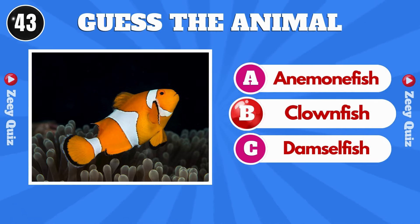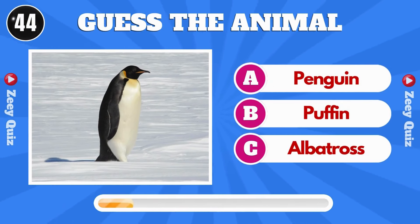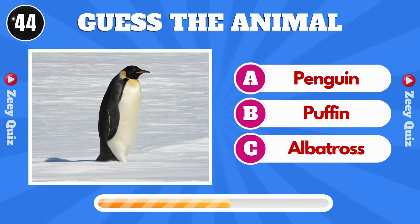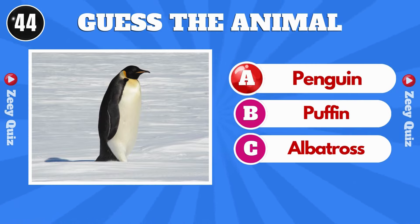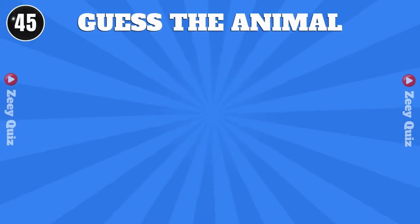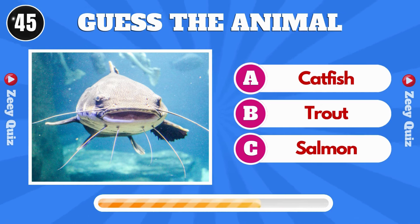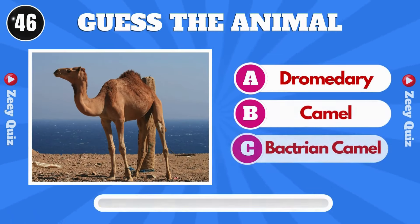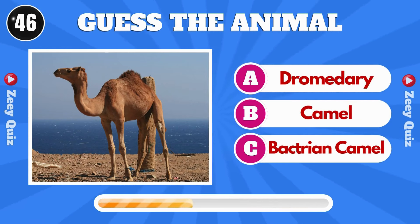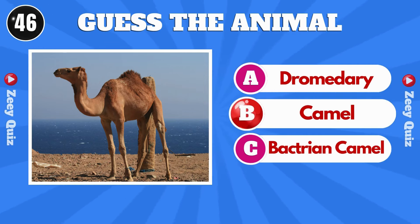Choice B, Clownfish. Choice A, Penguin. Choice A, Catfish. Choice B, Camel.